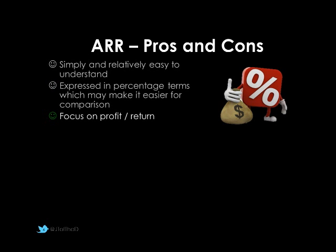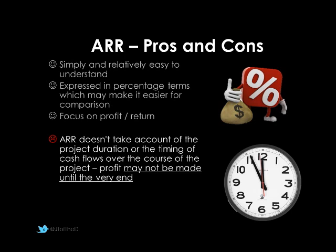This time, rather than payback — which didn't consider profit or the returns on investment — we are focusing on profit. We know exactly how much it's returning. If we're better off keeping our money in a bank with higher returns, we'll go for that, or if there's another investment which gives a better return, we could go for that. However, one really big disadvantage of average rate of return is that it doesn't actually take into account the project duration or the timing of the cash flows over the course of the project. As we saw in the example, payback actually occurred somewhere in year four, so if we had to cease the project after three years, we wouldn't have made a 10.2% return. The profit might not actually be made until the very end, with our largest positive cash flows at the end.